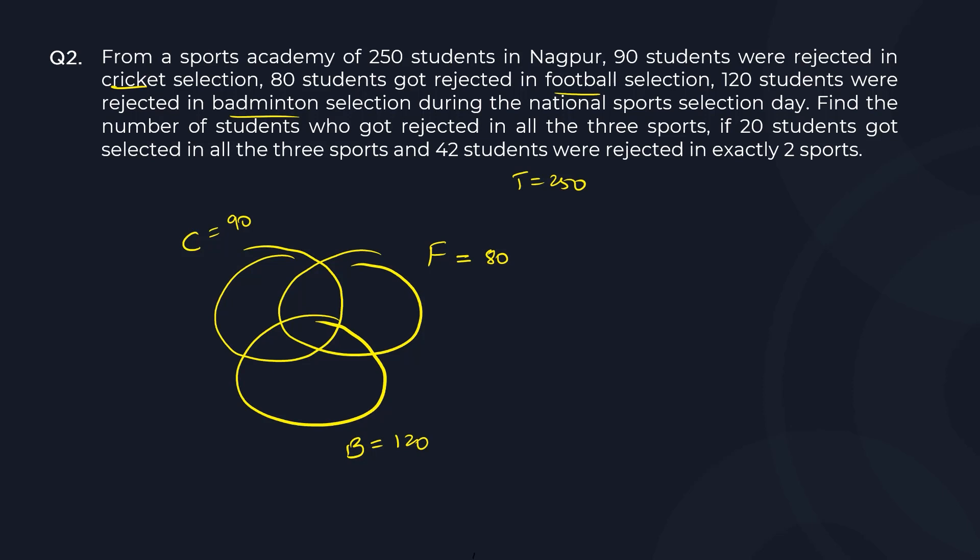Now remember, if 20 students got selected in all three sports, then outside should be 20. Why is it 20? Because these circles represent rejections. So somebody who's not rejected at all in anything should be completely outside. You can't put these 20 anywhere inside.